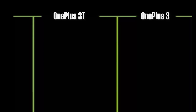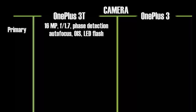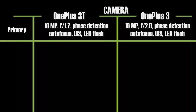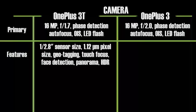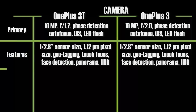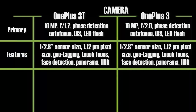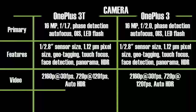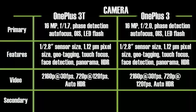Talking about the camera, the OnePlus 3T comes with a 16-megapixel camera with an f/1.7 aperture, phase detection autofocus, OIS, and LED flash. The OnePlus 3 comes with a 16-megapixel camera with an f/2.0 aperture and also supports phase detection autofocus, OIS, and LED flash. Both phones are capable of recording Full HD and 4K videos.